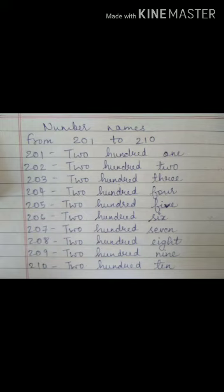So, all of you, that's all for today. You need to write number names from 101 to 210 two times in your notebook. So, that's all for today. Thank you and have a nice day. Thank you.